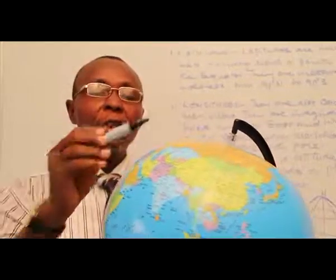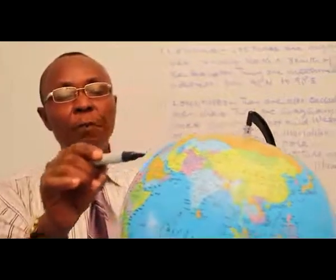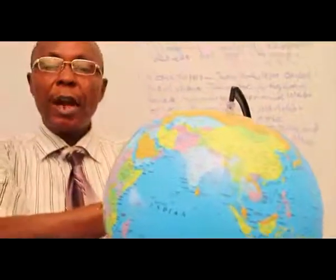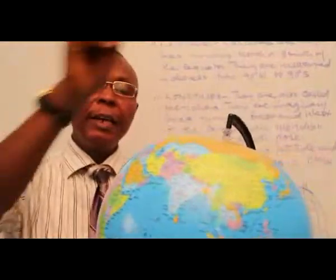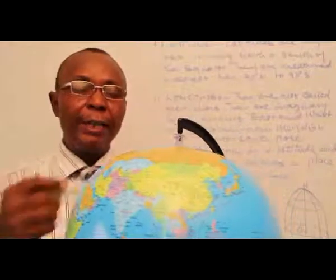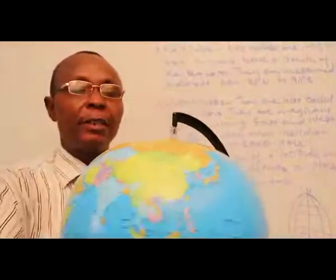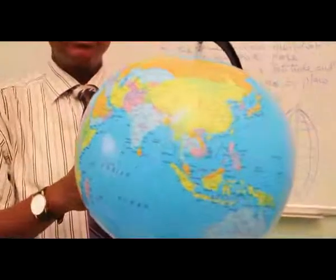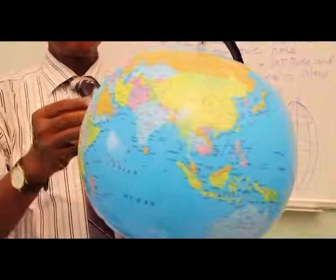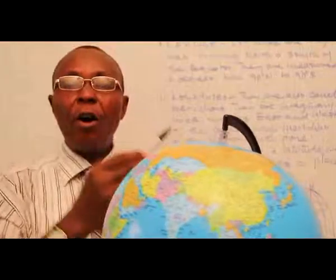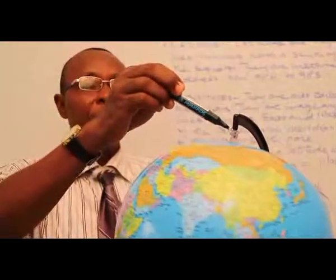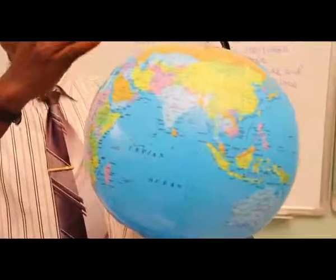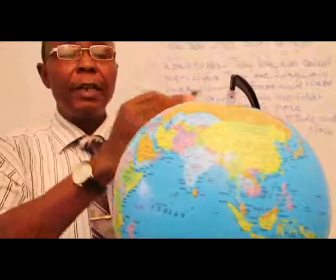We also have the longitude. If you can see clearly, you see this line running, going the other way, going round and forming a complete circle on its own. There are many of them. This one is running east or west of the Greenwich Meridian. The point from north down to the south is what we refer to as the Greenwich Meridian. To the east and to the west are longitudes.